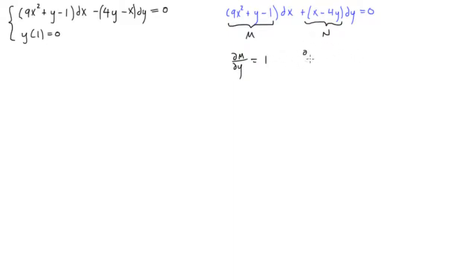Then we have dN with respect to, sorry, that is x, and we get 1 plus 0. So look at that. These two guys are definitely equal to each other, so this is now an exact differential equation.